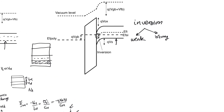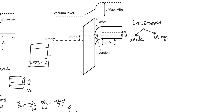In strong inversion, we have an electron charge near the surface which is at least equal to the hole concentration in the bulk. We say we are in strong inversion when the surface is at least as n-type as the bulk is p-type — i.e., the surface electron concentration equals Na. When people talk about MOSFETs or transistors being turned on, they are referring to strong inversion.